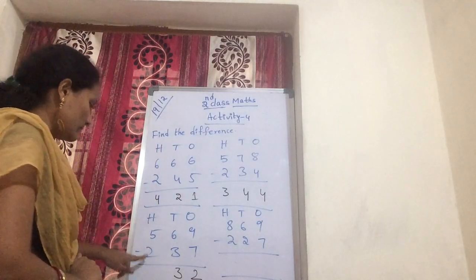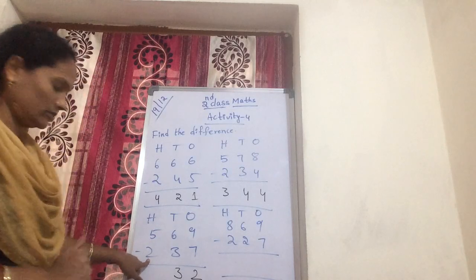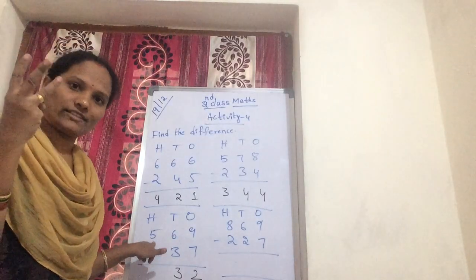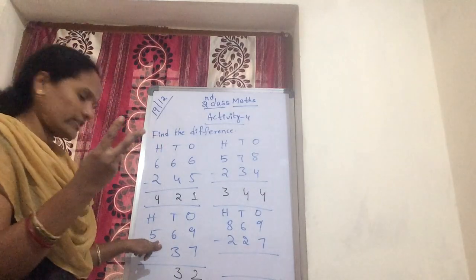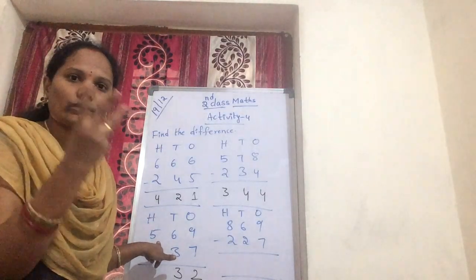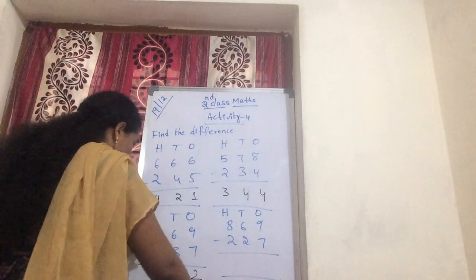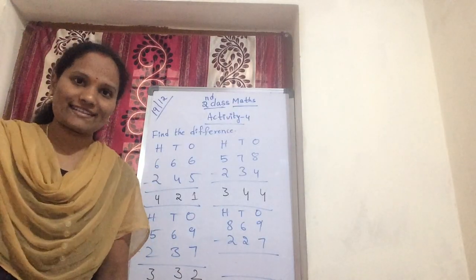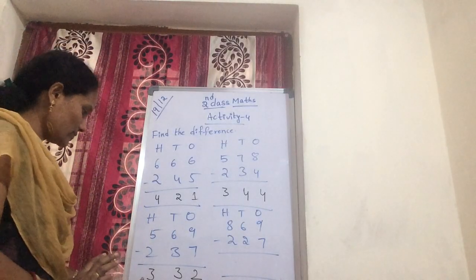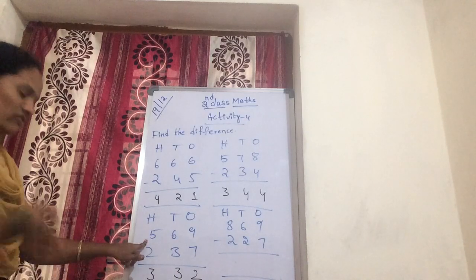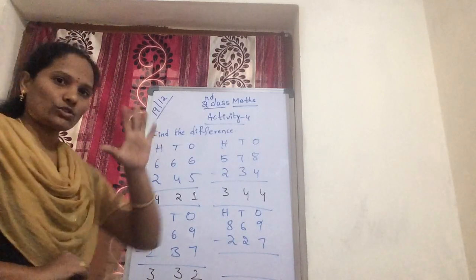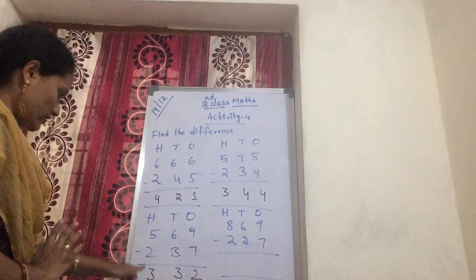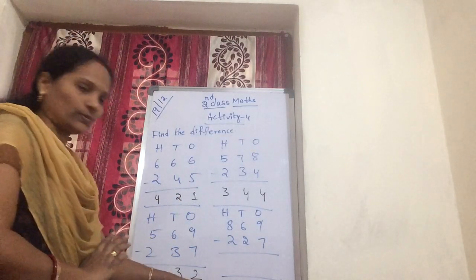Now next, coming to hundreds — 5 minus 2. Count after 2: 2 after 3, 4, 5. You get 3 fingers. So write 3 in hundreds. Also explaining: 5 minus 2 — show 5 on your fingers, removing 2: 1, 2 — you get 3. Both answers are equal. So what is our number? 332.